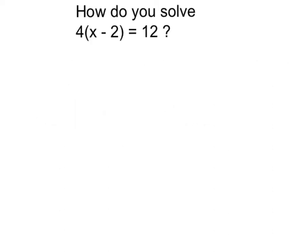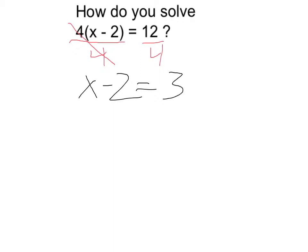So if I divide both sides by 4, on the left that just cancels out the 4 at the front, because I'm multiplying 4 times the whole quantity x minus 2. So now I have x minus 2 is equal to 12 divided by 4, which is 3.